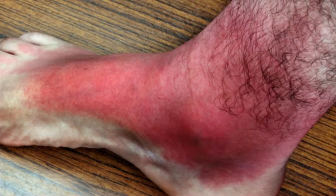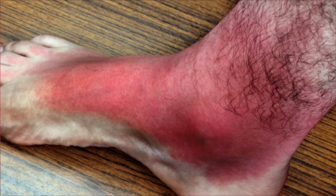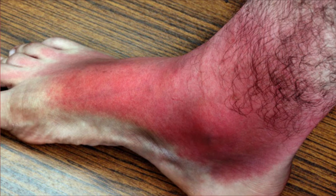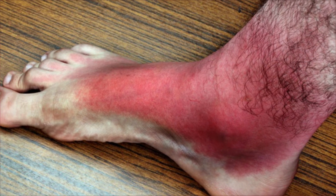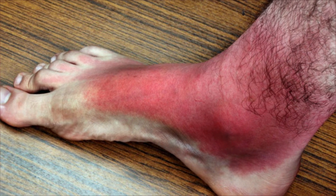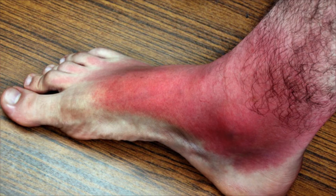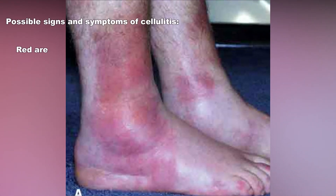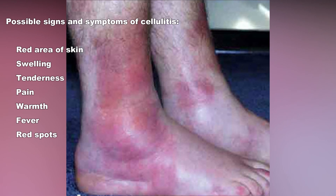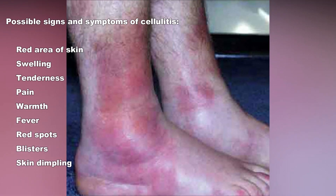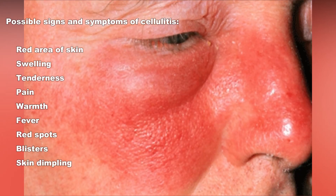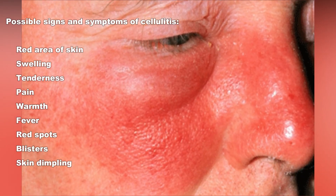Possible signs and symptoms of Cellulitis, which usually occur on one side of the body, include a red area of the skin that tends to expand, swelling, tenderness, pain, warmth, fever, red spots, blisters, and skin dimpling.